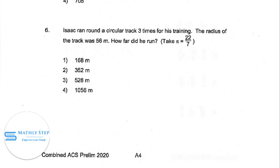Question 6. Isaac ran around a circular track three times for his training. The radius of the track was 56 meters. How far did he run?